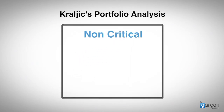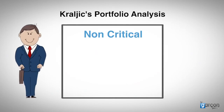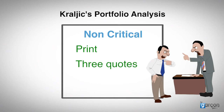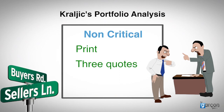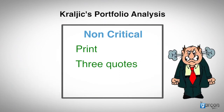I used to have a team member called Phil, and Phil bought print. Phil would get three quotes for each job and negotiate hard to get the best terms possible. The problem with Phil's approach was that while print can be a buyer's market, with low switching costs and multiple suppliers, Phil spent a lot of time focusing on one variable: price.